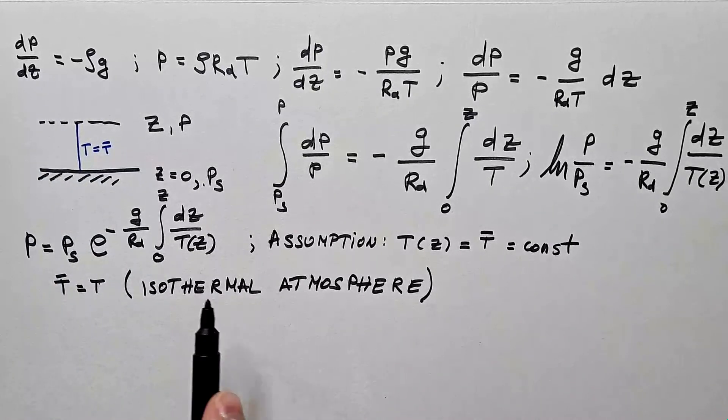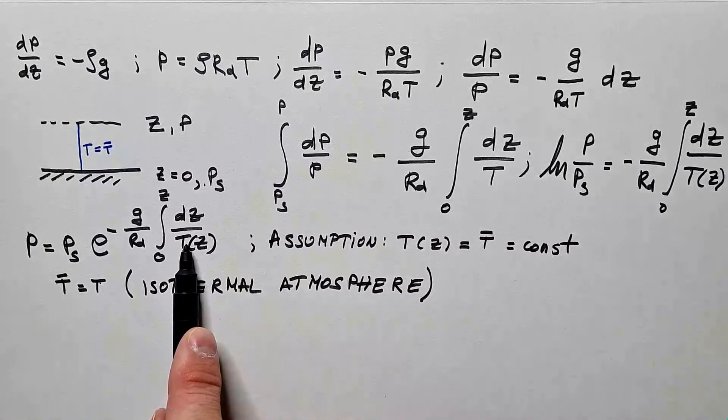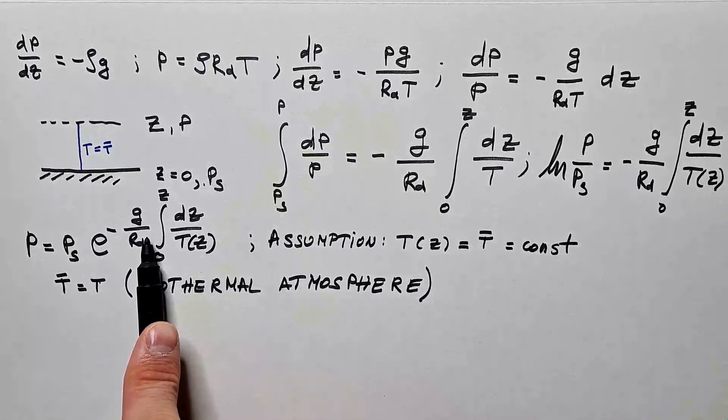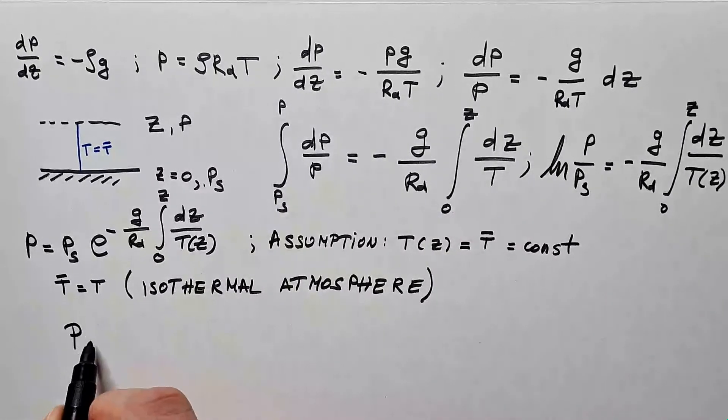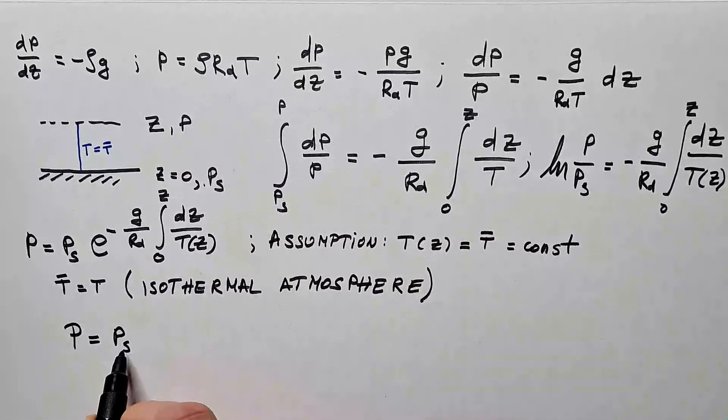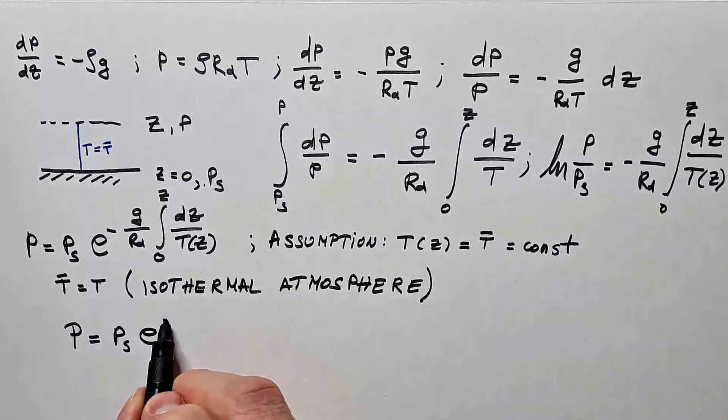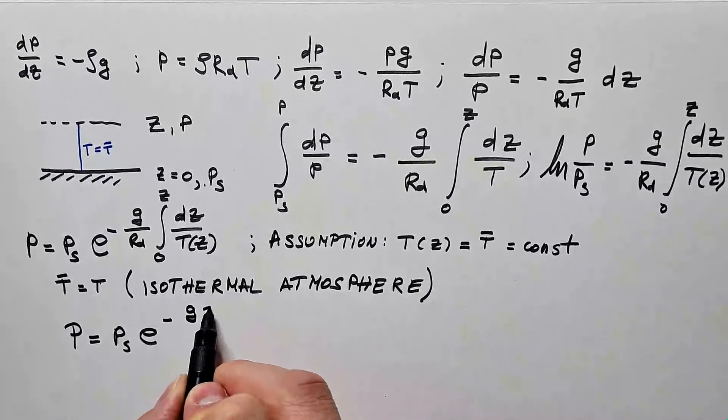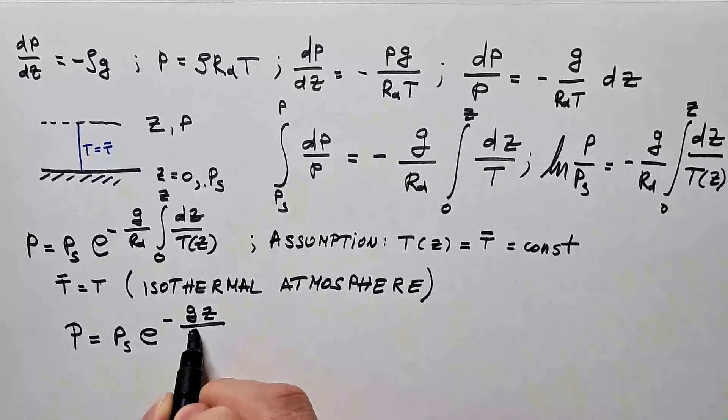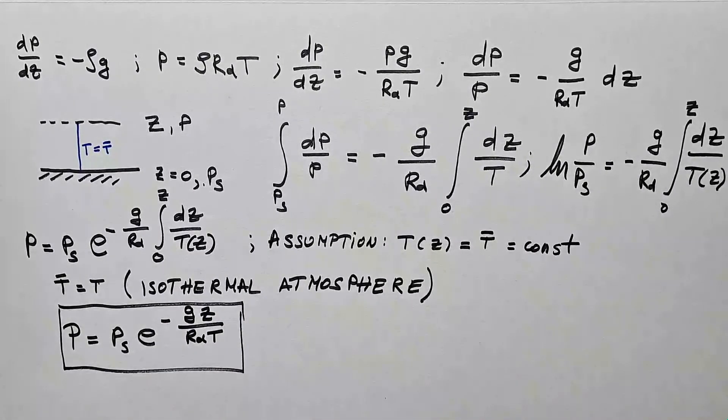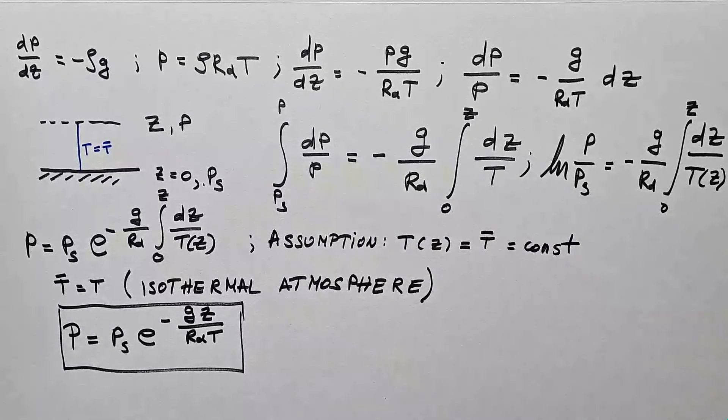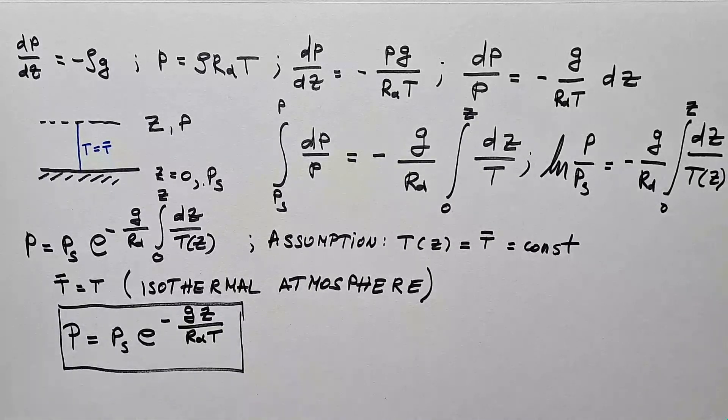Well, if we introduce this assumption that this is not function of height anymore, it's constant, we can move it in front of the integral, and the solution for this integral will be p equals ps e to minus gz over Rd T. And we already know from one of my previous videos that this is called barometric formula, and it tells us how pressure changes with the height.